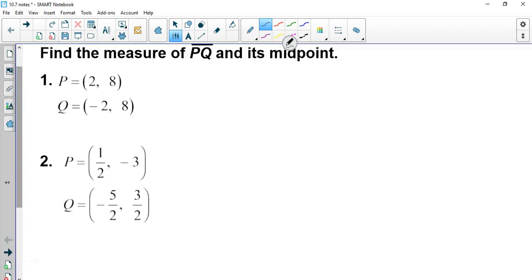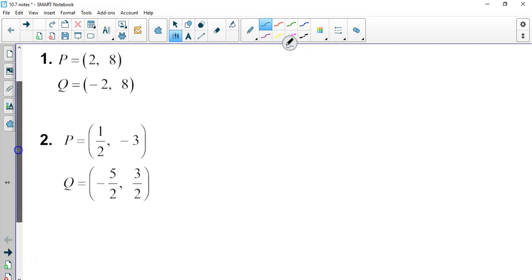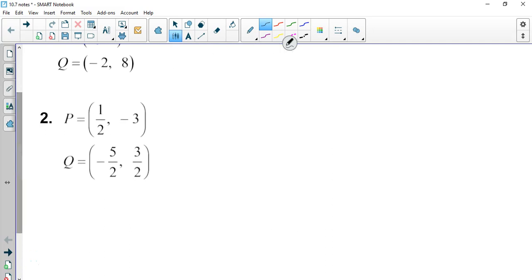Alright, so we're going to find the distance, the measure, and the midpoint. I'm going to do number 2 because it looks harder. Remember, midpoint is x plus x over 2 and y plus y over 2. You're just averaging them.